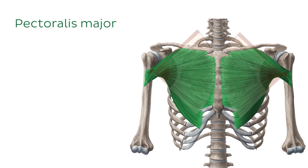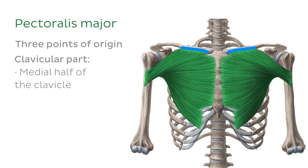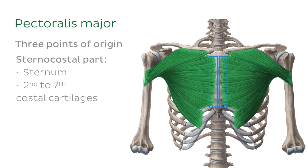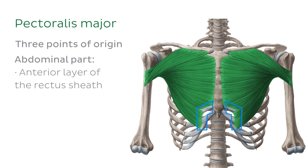The pectoralis major muscle has three points of origin. It has a clavicular part, which has its origin on the medial half of the clavicle. It has a sternocostal part, which has its origin on the sternum and on the second to seventh costal cartilages. And the abdominal part of the pectoralis major has its origin on the anterior layer of the rectus sheath.